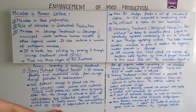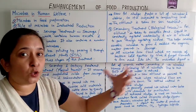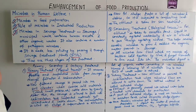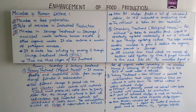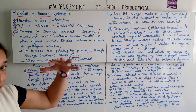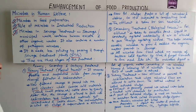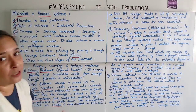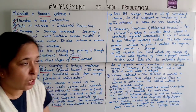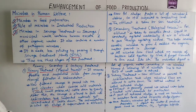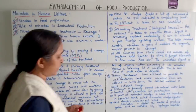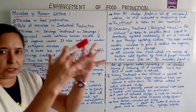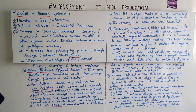The primary sludge traps a lot of microbes and debris, so it is subjected to composting on land. The supernatant effluent from the top is then taken for secondary treatment.